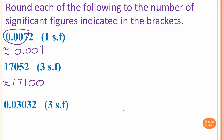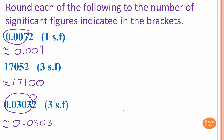Next one: we have 1, 2, 3, 4 significant figures, and we want to round off to 3. So we take 1, 2, 3. We check the number after the last digit — after 3 is 2, which is less than 5, so we round down. The answer is 0.0303.